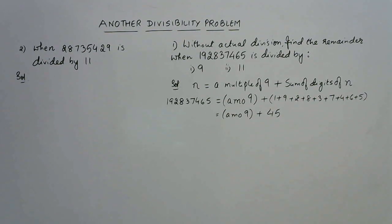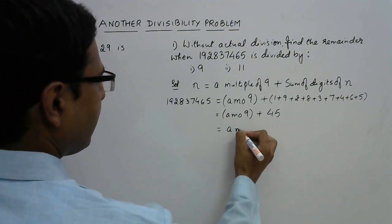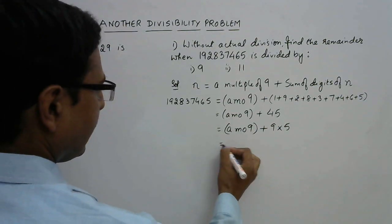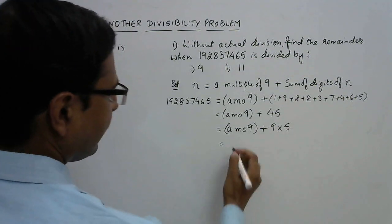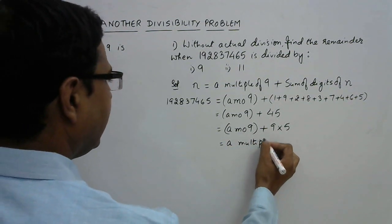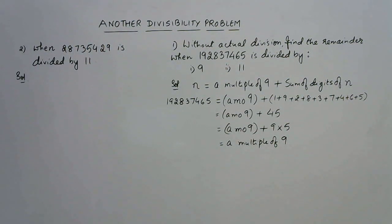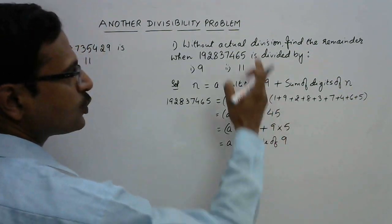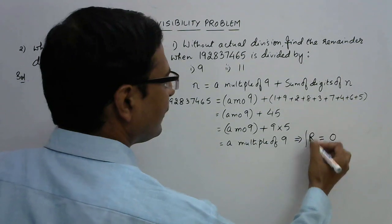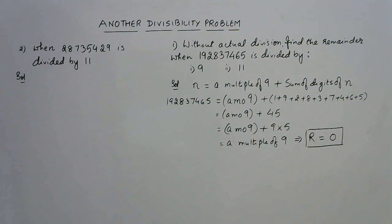You can see that 45 is exactly divisible by 9. So this is a multiple of 9 plus 9 times 5, and now since 9 is common in both parts, the entire right-hand side becomes a multiple of 9. So the number 192837465 is actually a multiple of 9, which means the remainder when dividing by 9 is 0.